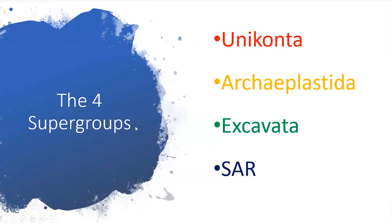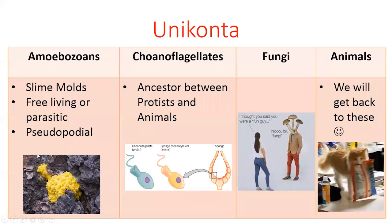Now let's look at the four supergroups of Eukarya. We've got Unikonta, Archaeplastida, Excavata, and SAR. Starting with Unikonta, there are four subgroups you need to be aware of: amoebazoans, choanoflagellates, fungi, and animals. Amoebazoans are just slime molds — they can be free-living or parasitic and they utilize pseudopodial motion.